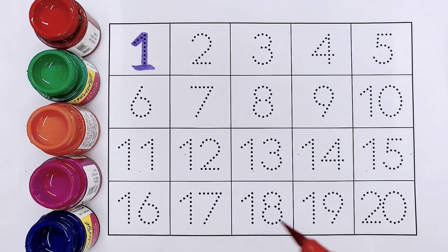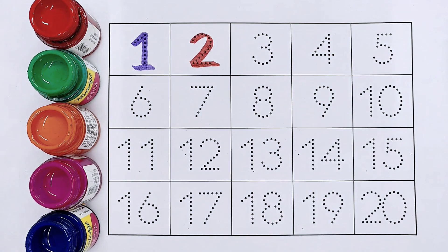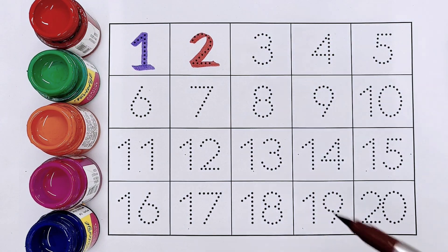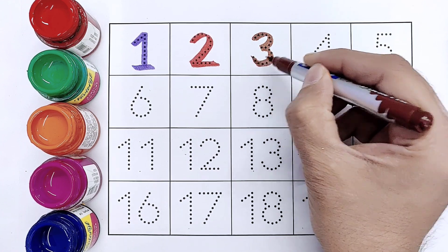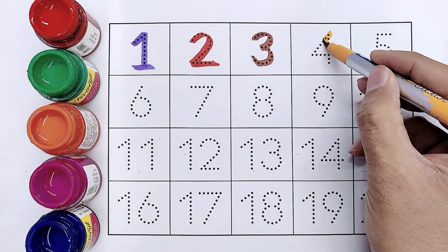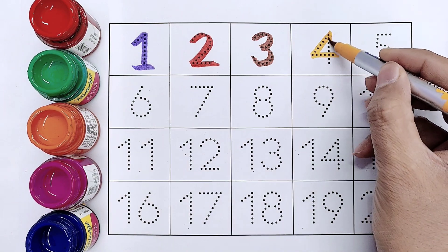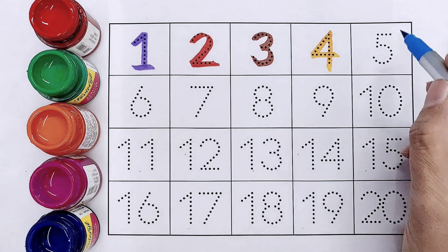One. One. It's two. Two. Three. Number three. Four. Number four.